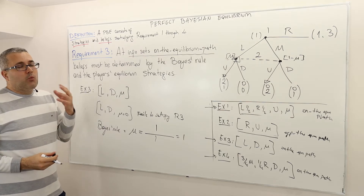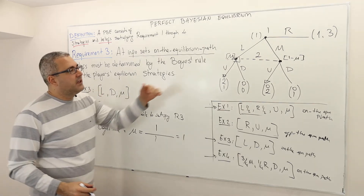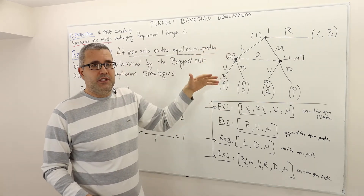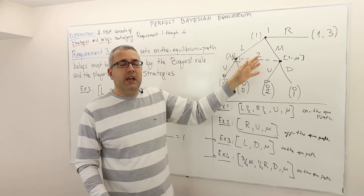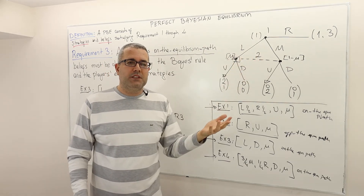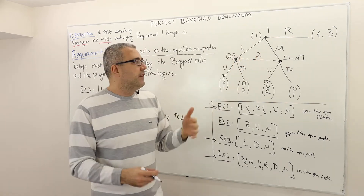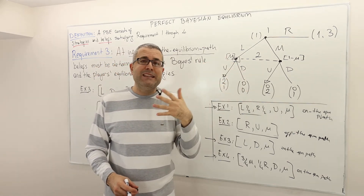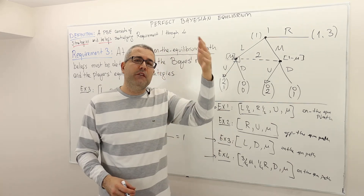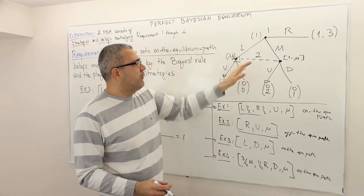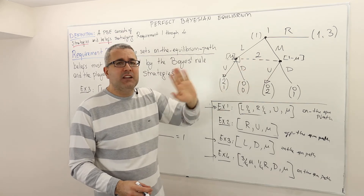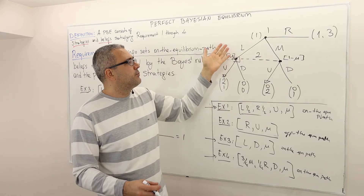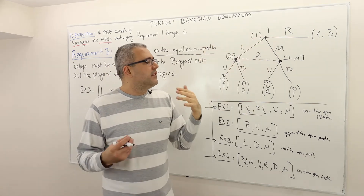What is the intuition behind requirement three? Given the player's strategies in a strategy profile, the player's beliefs at information sets shouldn't be random, especially if those information sets are on the equilibrium path. They should be consistent with the previous player's moves. I know that player two cannot observe player one's move directly.